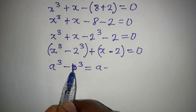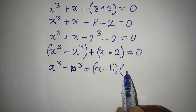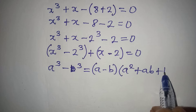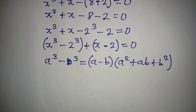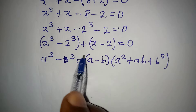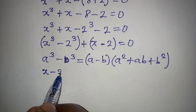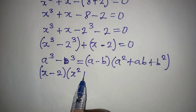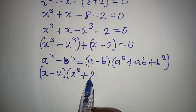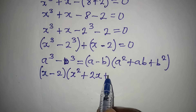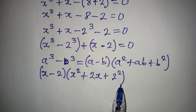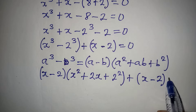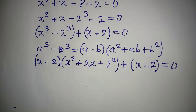We have x to the power of 3 minus 2 to the power of 3. Now apply the standard difference of cubes formula: a cubed minus b cubed equals a minus b, times a squared plus ab plus b squared. Our a is x and our b is 2, so a minus b is x minus 2.